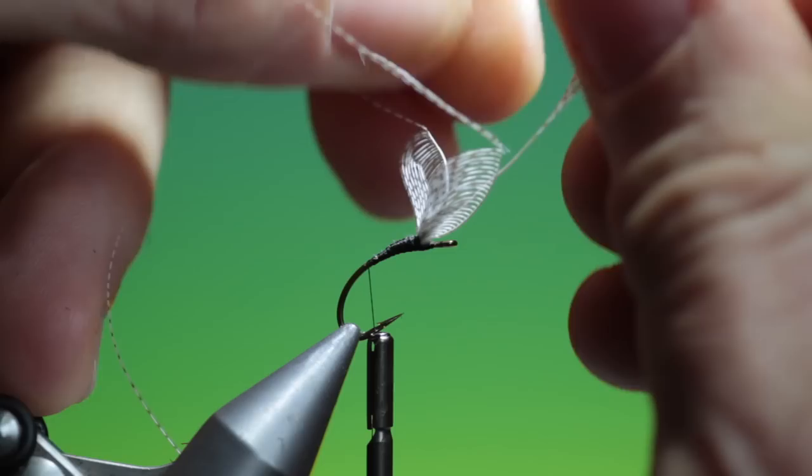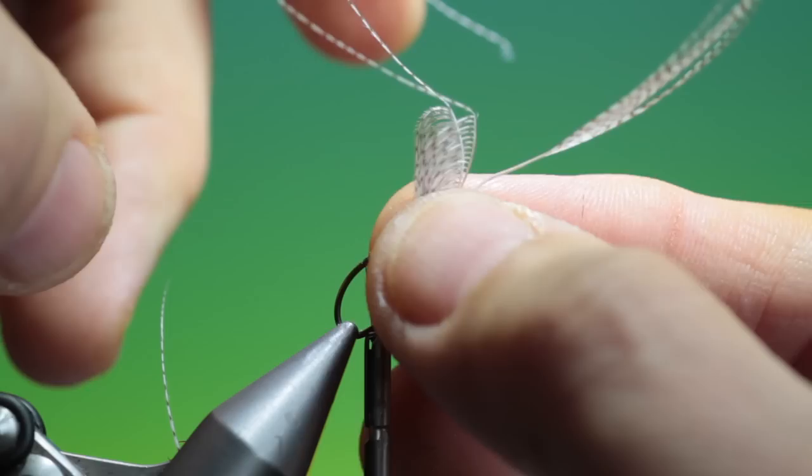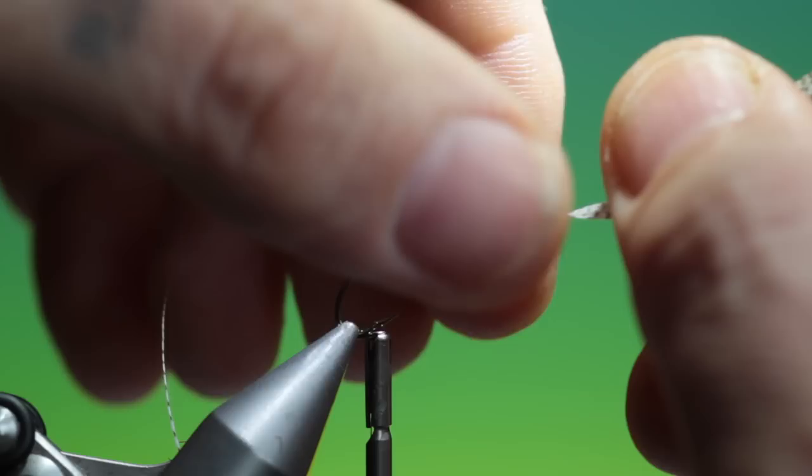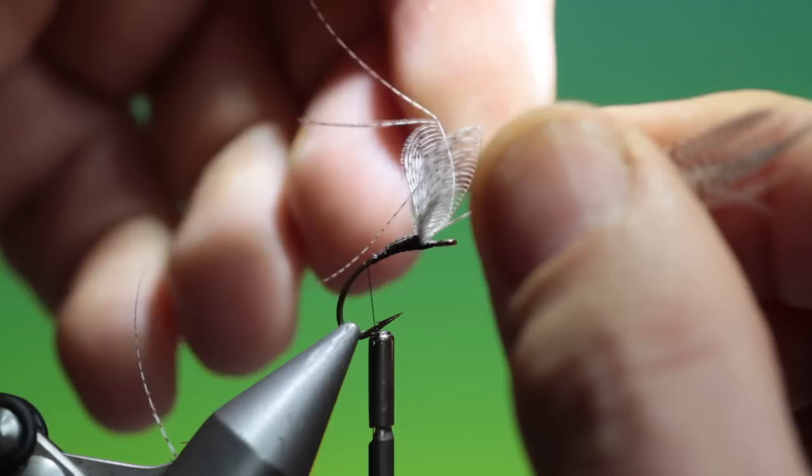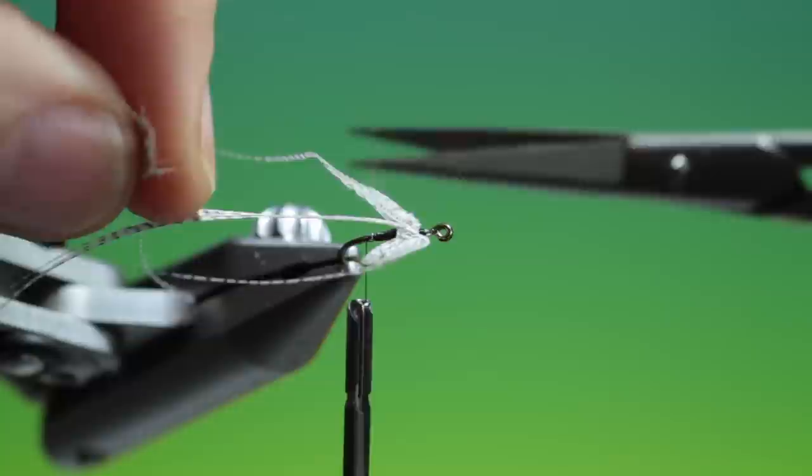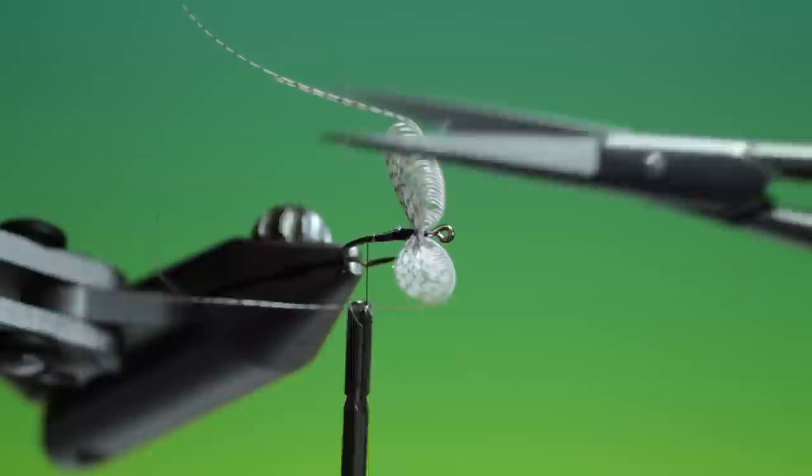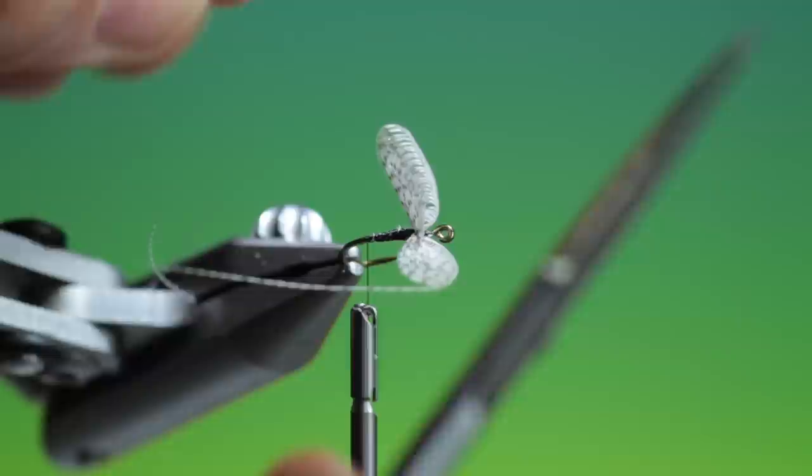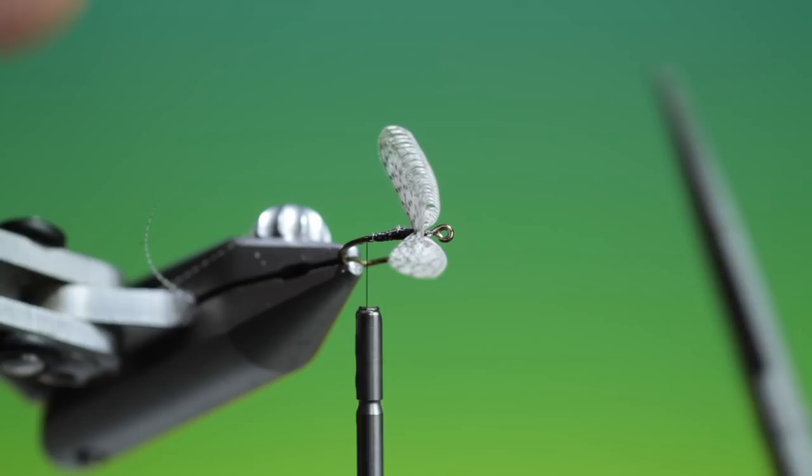There we go. All the way down. So now I want to cut out the flank feather stem. Careful you don't cut anything else. And then we'll cut off these. And there's the wings.